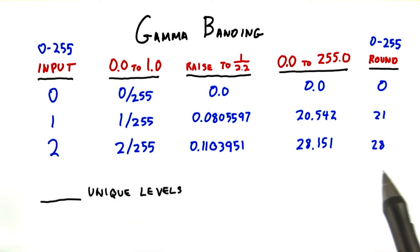The question to you is, how many unique output levels are there? I'm expecting an integer value, and it's clearly less than 256.